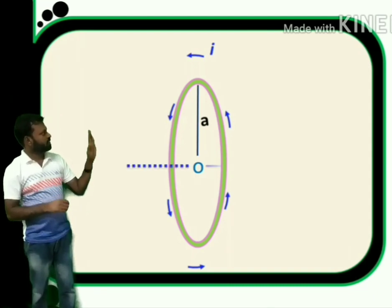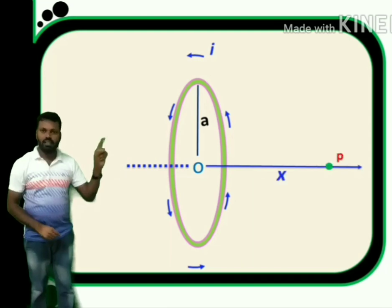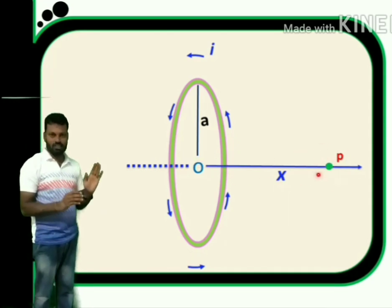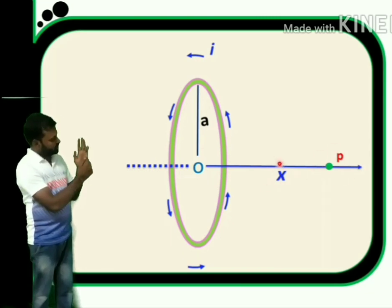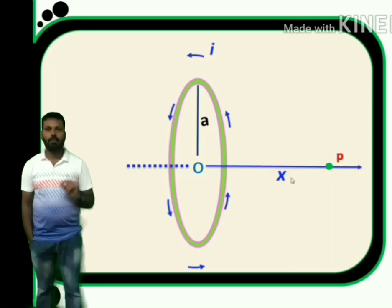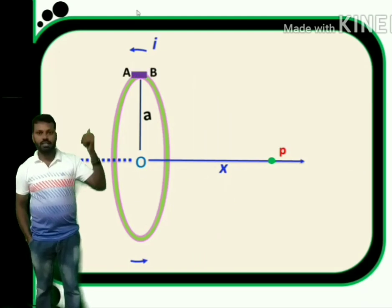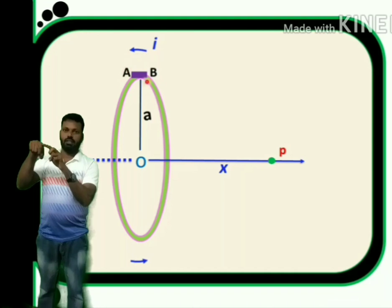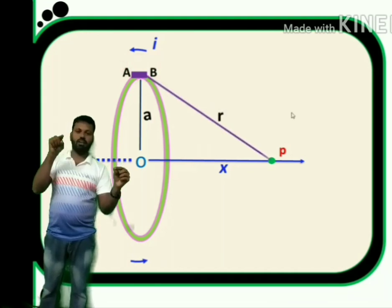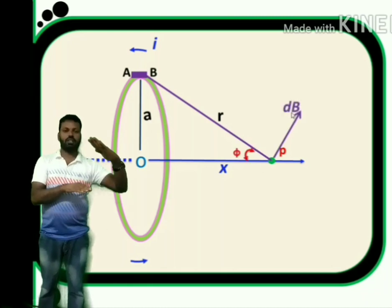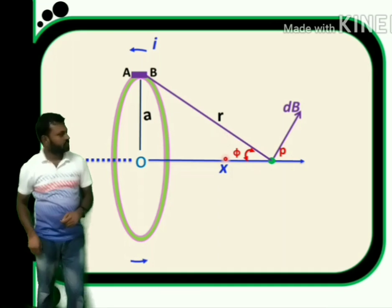From the center, at a distance X, there is a point P at which we have to find out magnetic induction. Our aim is to determine the magnetic field strength at point P, which is at a distance X from the center of the coil. To apply Biot-Savart law, we consider a small line segment AB on the circular coil. The length of this AB is dL. The line segment dL is at a distance R from the point P. The angle between the axis of the coil and position vector R is phi — that means the angle between X and R is phi. The magnetic field due to this small line segment at point P is given by dB, and it can be resolved into two components: dB cos phi and dB sin phi.